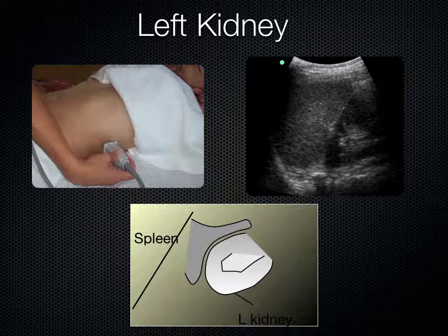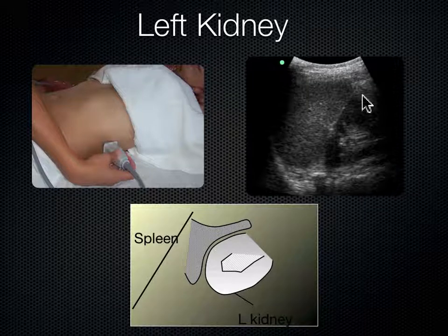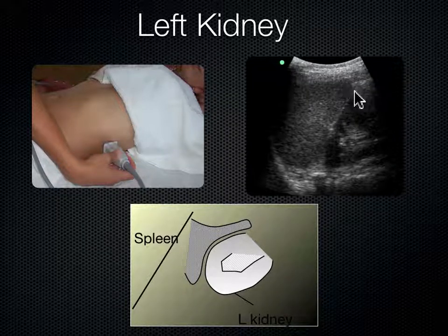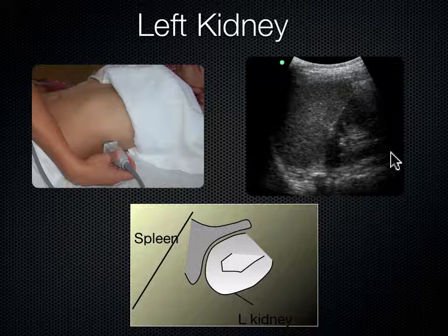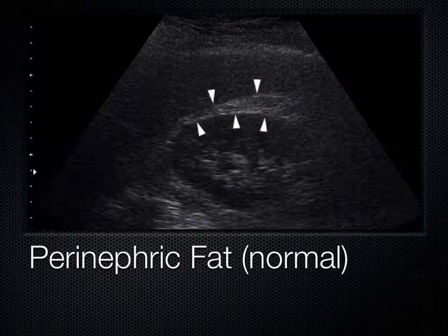The left kidney is more towards the head and more towards the bed — more superior and more posterior. You'll notice the tip of the spleen here is a little smaller than the liver, and it kind of stops right here, so we lose part of the kidney on the coronal approach. Many times on the left kidney, we need to get more posterior — come around the back a little more. You'll realize that today at the bedside when trying to find those left kidneys.